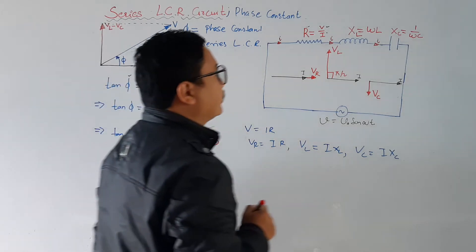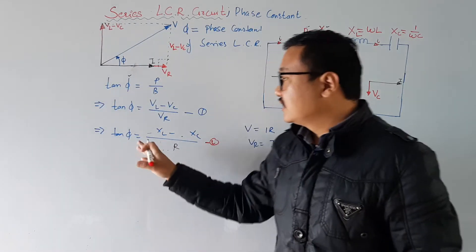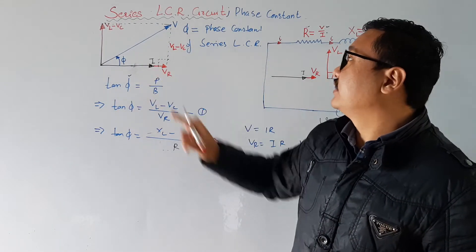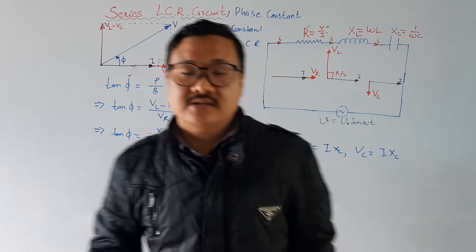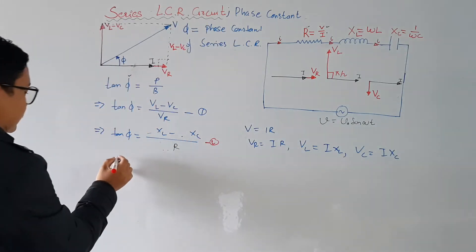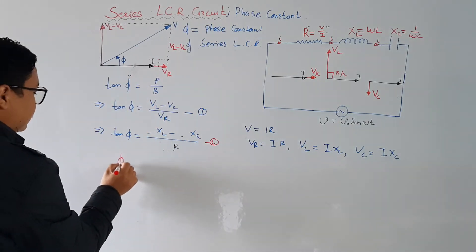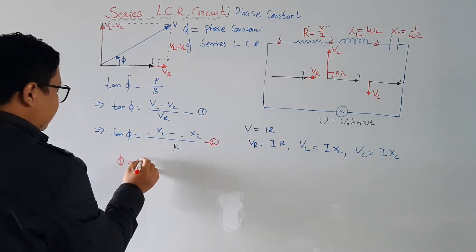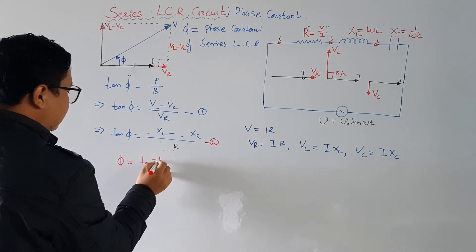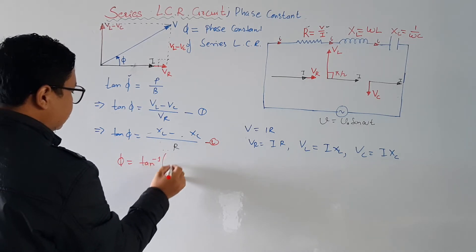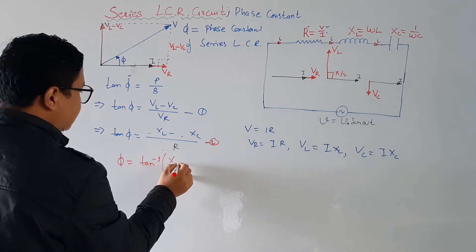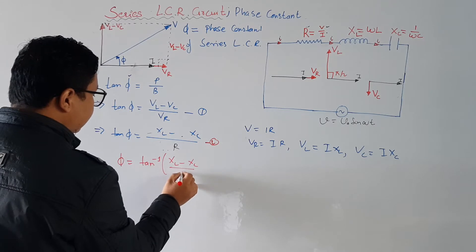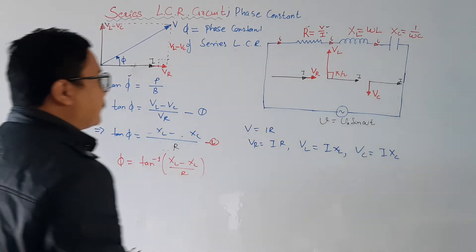This gives us equation number 2: tan φ equals (XL minus XC) divided by R. This is how we find tan φ, the phase constant. The phase constant φ is therefore equal to tan inverse of (XL minus XC) divided by R.